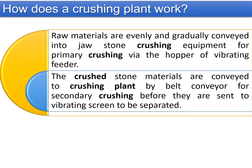In a crushing plant, raw materials are evenly conveyed into jaw crushing equipment for primary crushing via the hopper of the vibrating feeders. The crushed stone materials are conveyed by belt conveyor for secondary crushing, before being sent to the vibrating screen to be separated, and finally can be sent to tertiary crushing or the VSI for giving a final shape to the aggregates. The hardness of the jaw material depends on the type of aggregate being used — that is why we test the impact value and crushing value of aggregates to choose the appropriate jaw hardness.